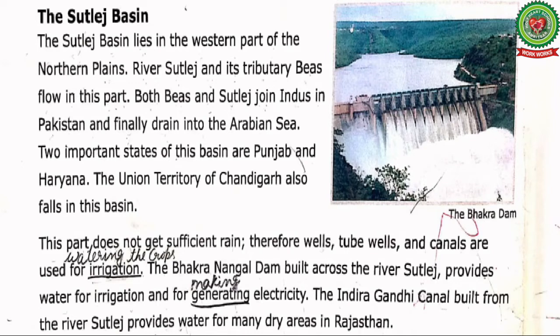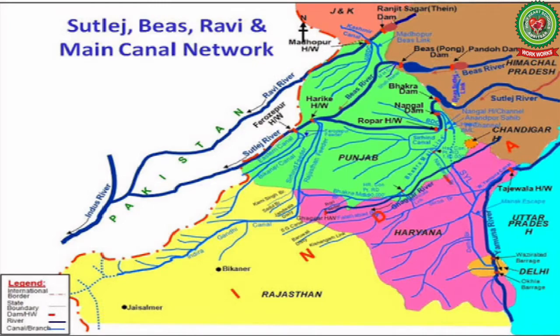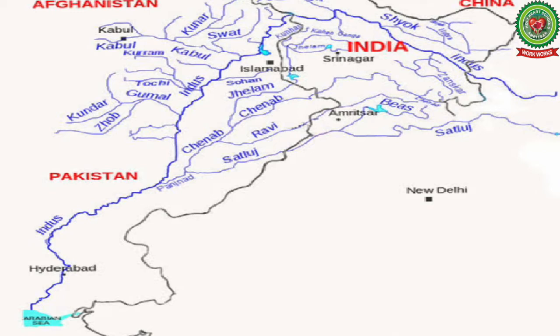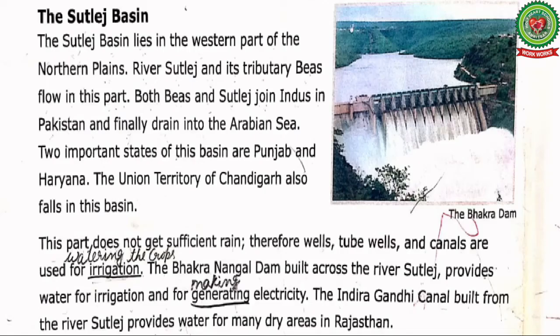Reading from the book: The Sutlej basin lies in the western part of the northern plains. River Sutlej and its tributary Beas flow in this part. Both Beas and Sutlej join the Indus in Pakistan and finally drain into the Arabian Sea. This means the Sutlej basin is located on the west side of the northern plains, and the rivers eventually reach the Arabian Sea.